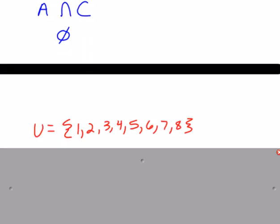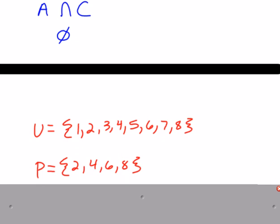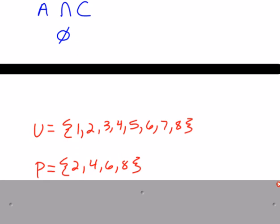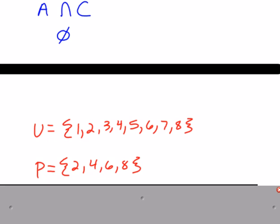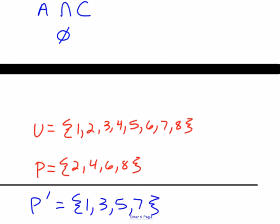If U represents the universal set — a collection of all numbers — and P is a subset within it, then the complement of P includes all numbers in the universal set that are not part of P. For example, if P contains certain elements, the complement would be the remaining values such as 1, 3, 5, and 7.